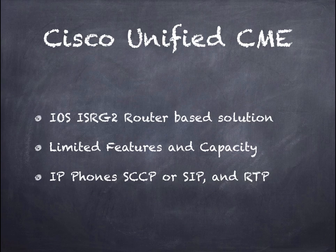Cisco Unified CME — the E stands for Express — is a scaled-down version of a full call manager. It is quite a different product. It is a command-line Cisco IOS-based solution, a program that you purchase and install into your IOS on an ISR G2 router — that's an Integrated Services Router Generation 2. It's also possible to install this software on a Generation 1 router. The Call Manager Express has a limited feature and capability set and is appropriate for a small company.